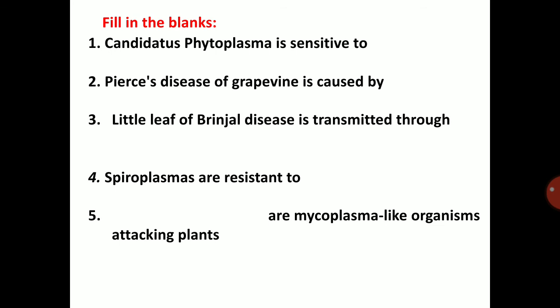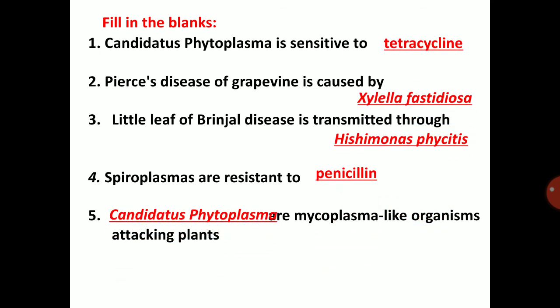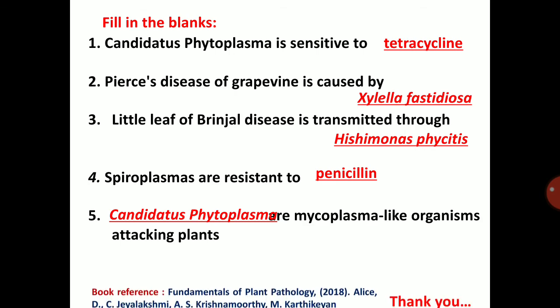This concludes the topic of Candidatus Phytoplasma, Spiroplasma, and Fastidious Vascular Bacteria. Important questions: Candidatus Phytoplasma is sensitive to tetracycline. Pierce's disease of grapevine is caused by Xylella fastidiosa. Little leaf of Brinjal disease is transmitted through Hishimonus phycitis. Spiroplasma are resistant to penicillin. Candidatus Phytoplasma are mycoplasma-like organisms attacking plants. Thank you.